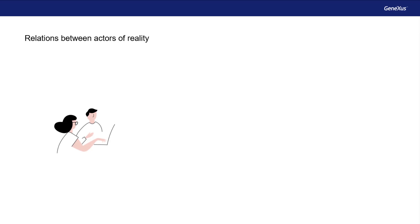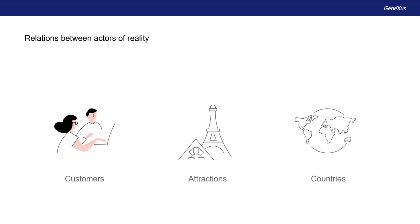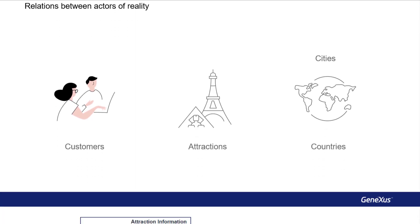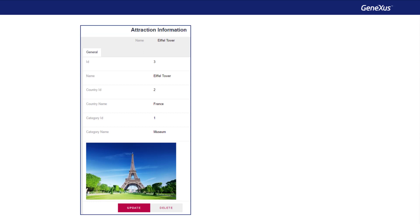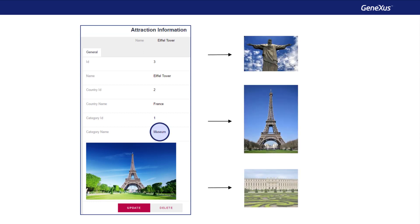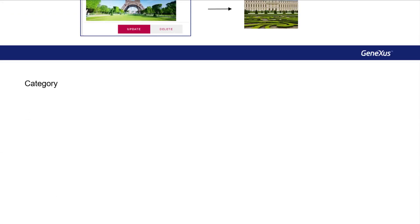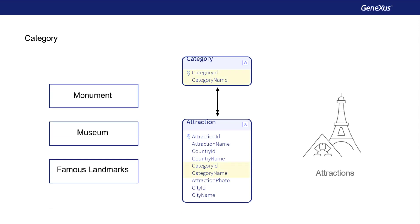In several examples of our travel agency, we see that the actors of reality are related in different ways. For example, when an attraction belongs to a category, this category can be the category of many attractions. When we design transactions, we can represent these relationships by including the attributes of one transaction in another.